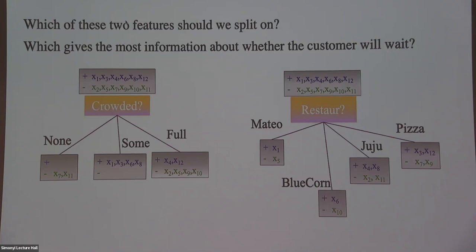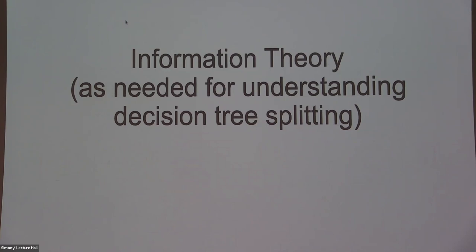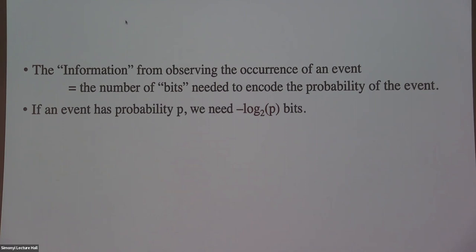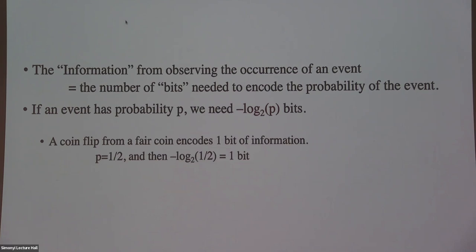We were in the middle of talking about information theory. I defined for you last time that the information from observing the occurrence of an event is defined as the number of bits needed to encode the probability of the event. It is negative log base 2 of p bits. For a coin flip from a fair coin, that's one bit of information.